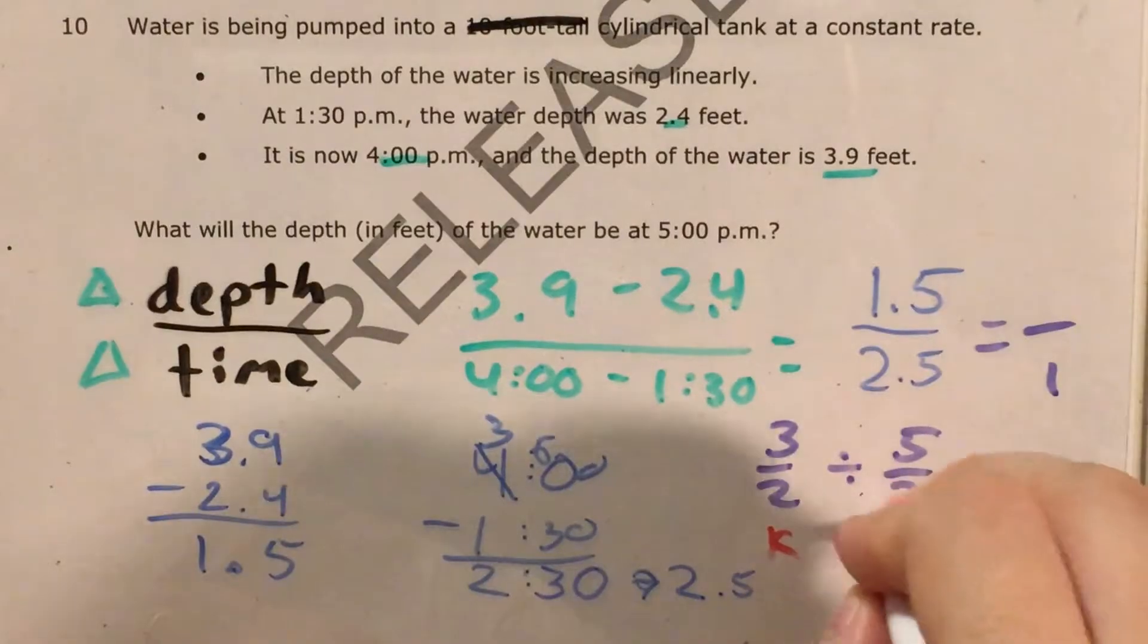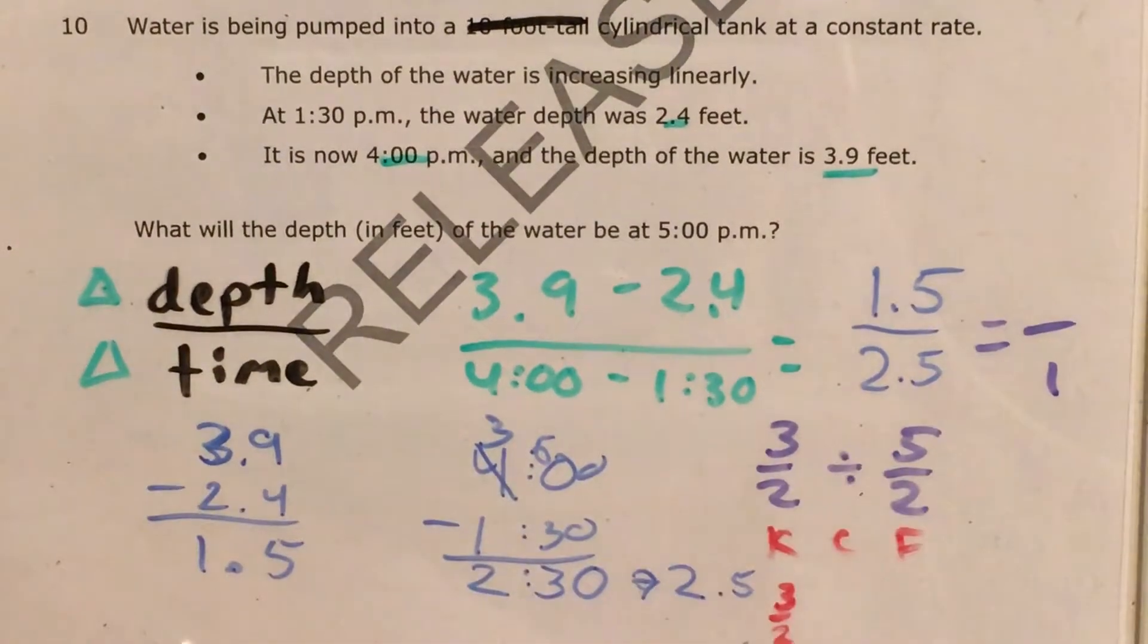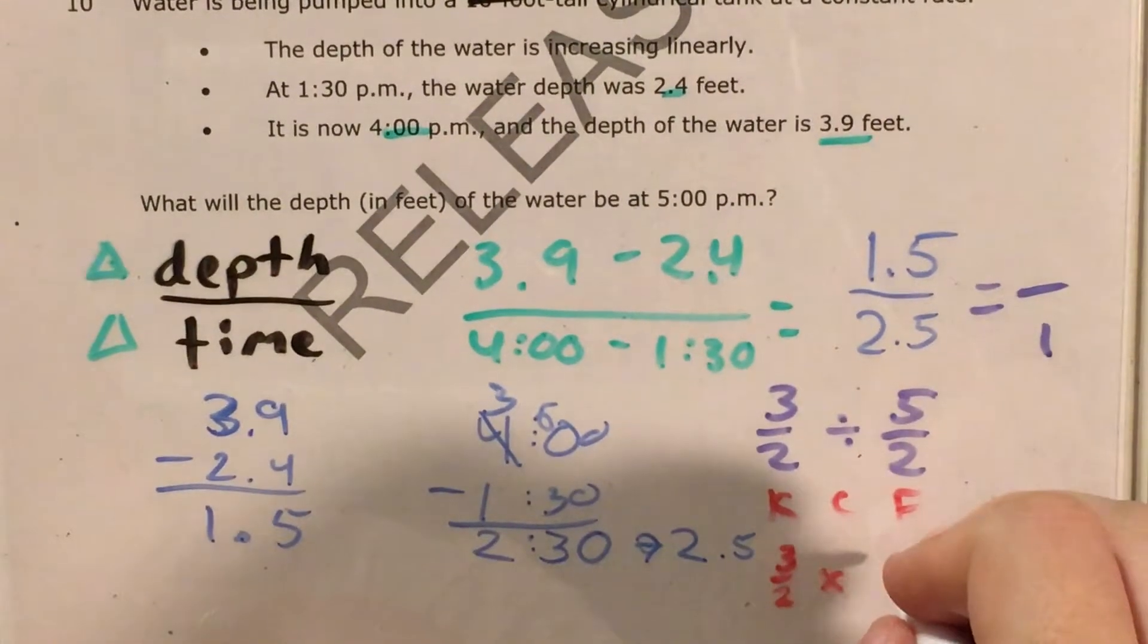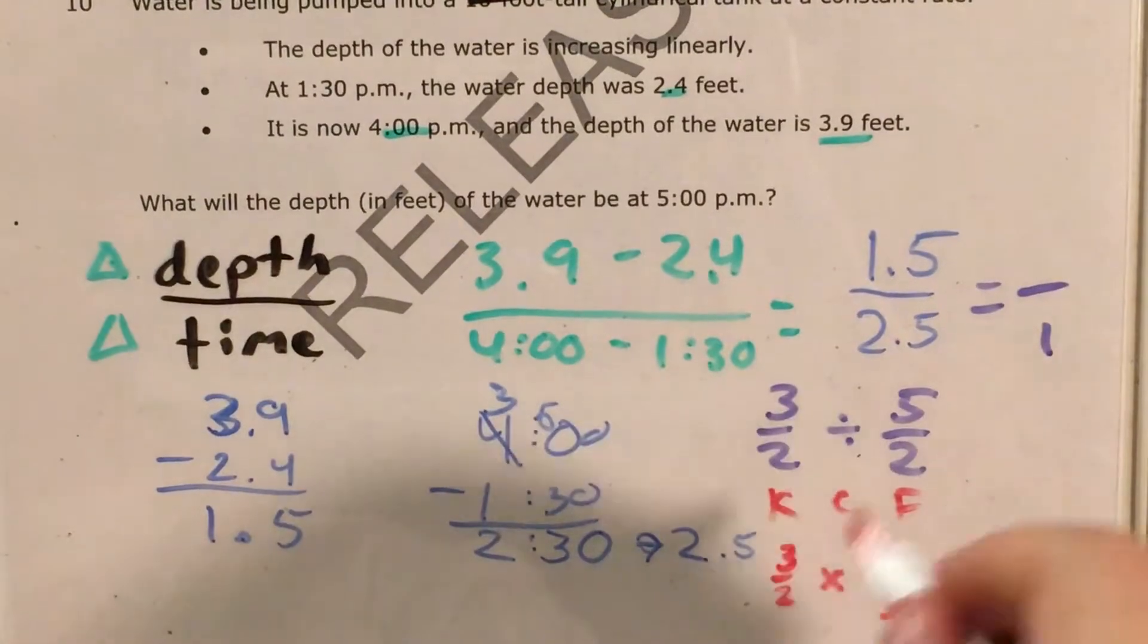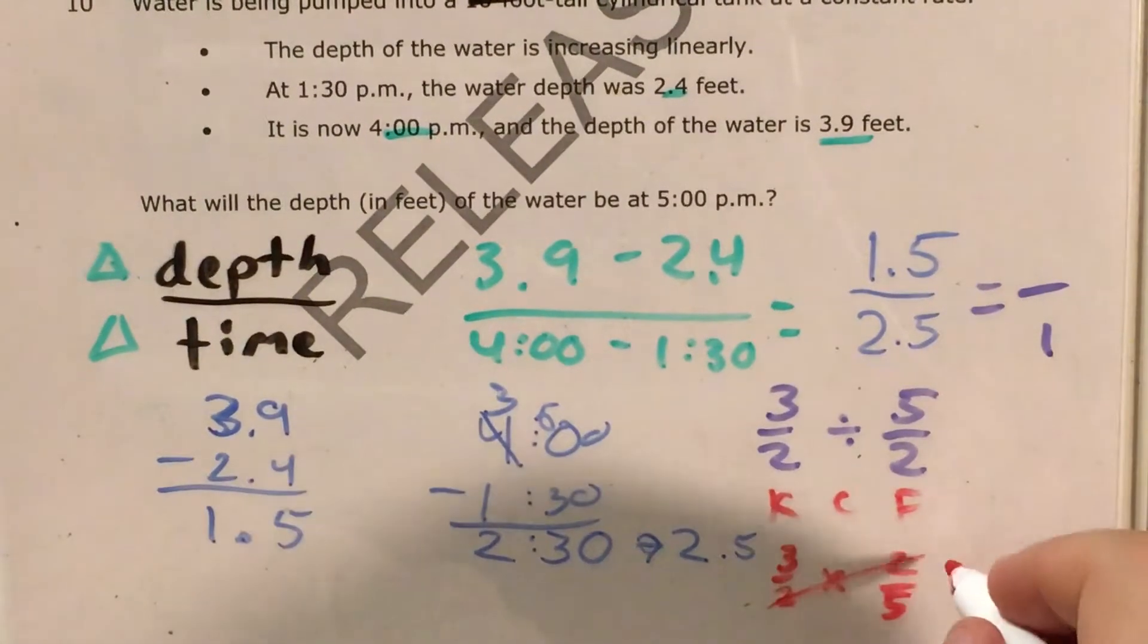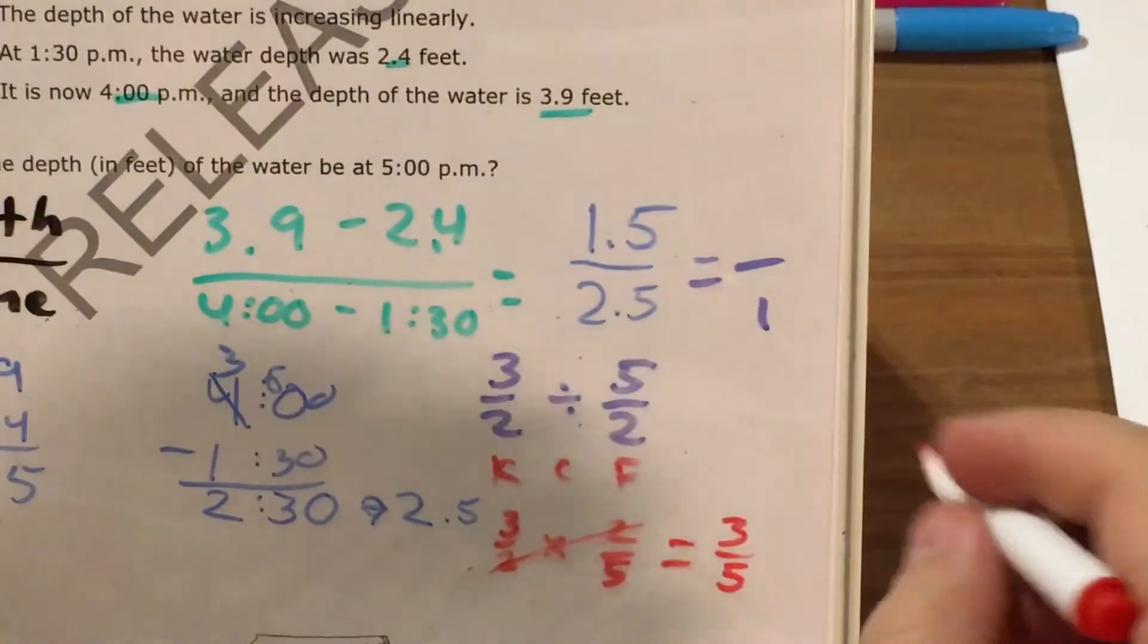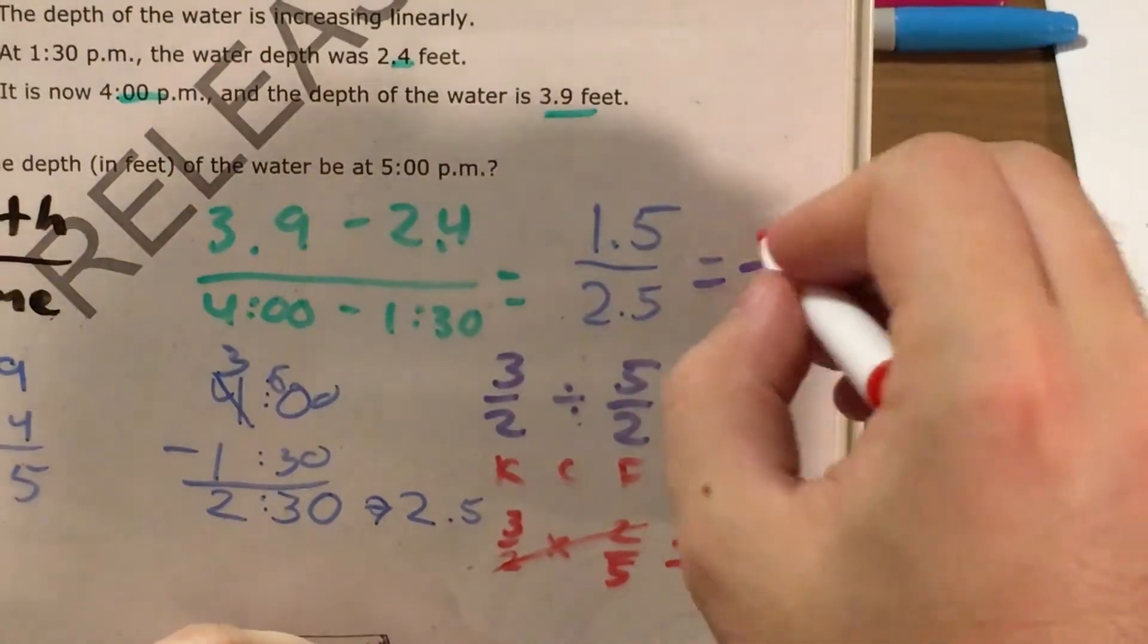I keep, change, flip. 3 halves stays at 3 halves. Divide changes to times. 5 halves gets flipped over to 2 fifths. I can cross out a 2 from the bottom and the top and that will just get me 3 fifths, which if I want to turn that back into a decimal is the same thing as 6 tenths.